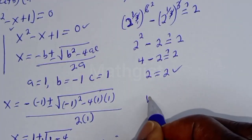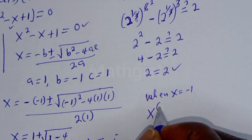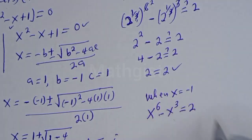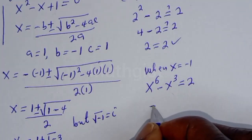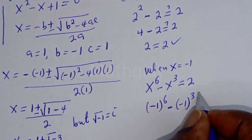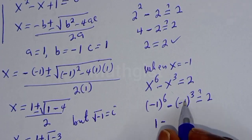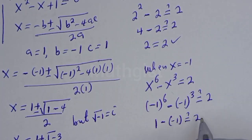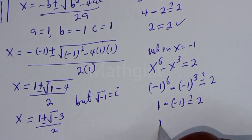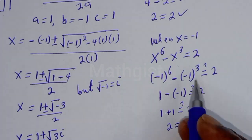Let's check when s is equal to minus 1. We have s raised to the power 6 minus s raised to the power 3 is equal to 2. Then minus 1 raised to the power 6, minus bracket minus 1 raised to the power 3, must equal 2. Minus 1 to the power 6 is 1, and minus 1 to the power 3 is minus 1. So 1 minus minus 1 equals 1 plus 1 equals 2, which is also true when s is equal to minus 1.